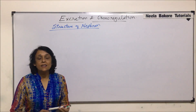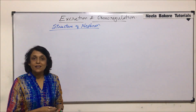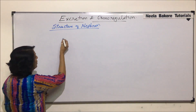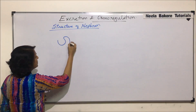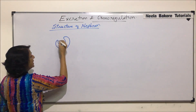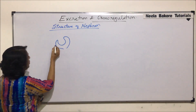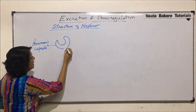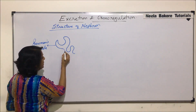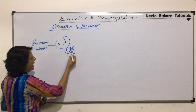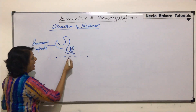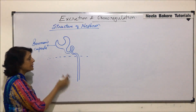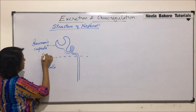The first part is Bowman's capsule. A typical nephron would have a cup-like structure known as the Bowman's capsule. This Bowman's capsule leads into a coiled tube known as the proximal convoluted tubule, and this part remains in the cortex. Then this tube becomes long and gets into a loop-like structure, and this loop is in the medulla region. So this is the medulla, and this part is the cortex part.